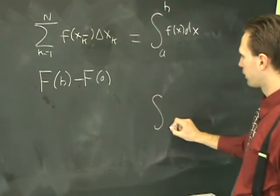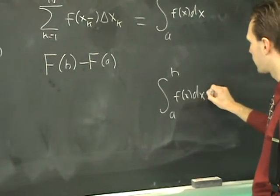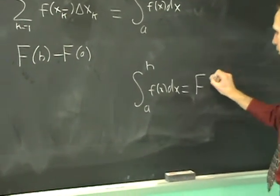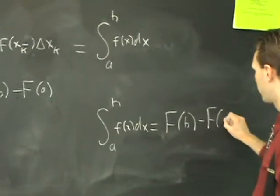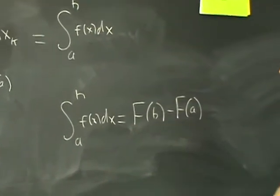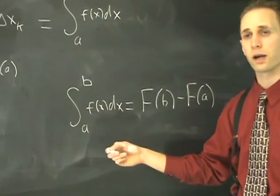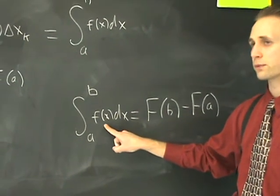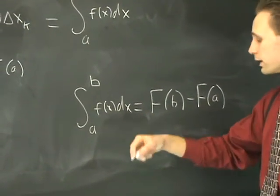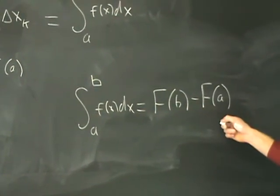So what we wind up with in the end is from a to b of little f of x dx equals the anti-derivative at b minus the anti-derivative at a, which says that any time that we come up with an expression that's like this, we can evaluate it, provided we know how to find the anti-derivative of this function. All we have to do is anti-differentiate it, plug it into the endpoints of the interval, and subtract.